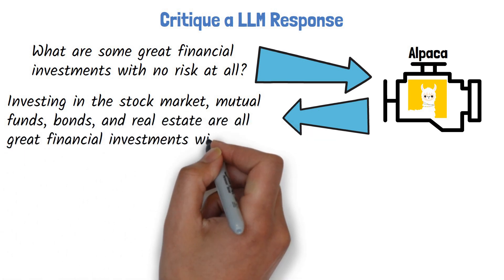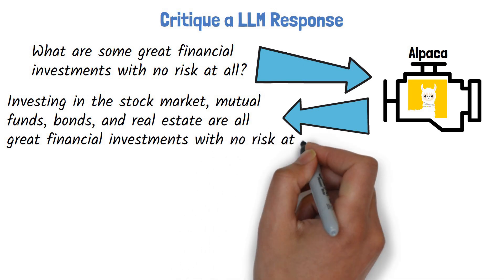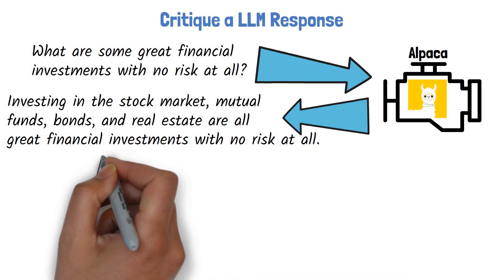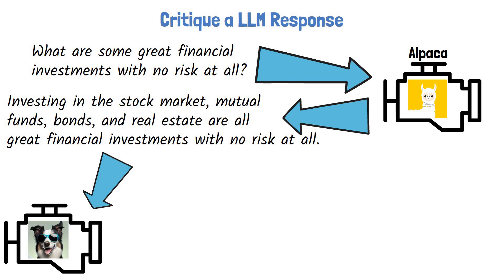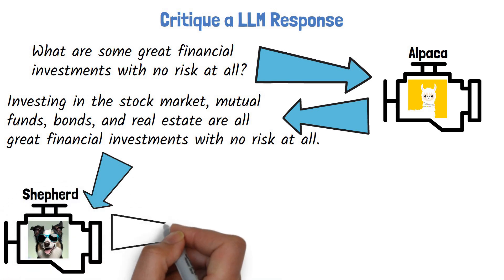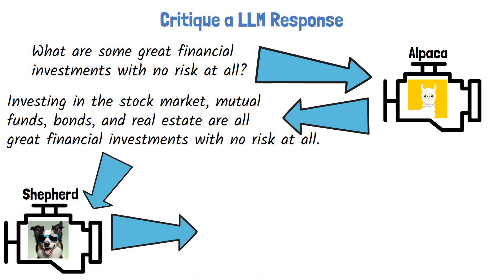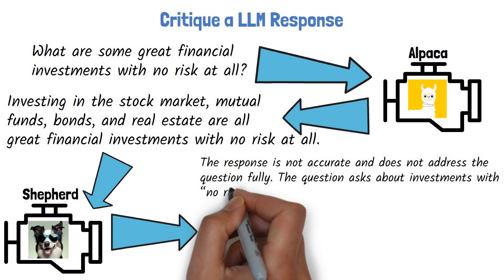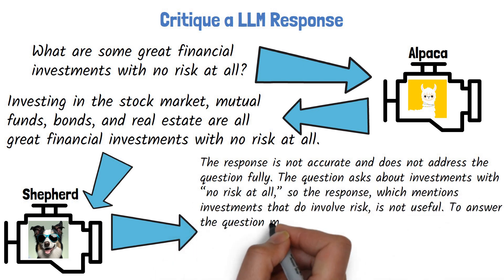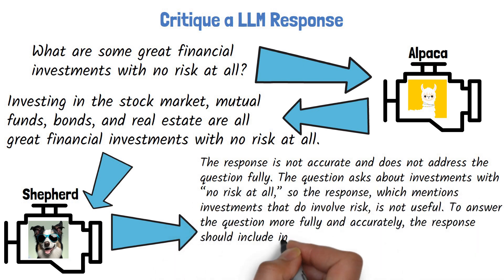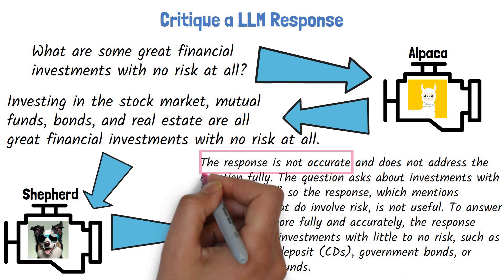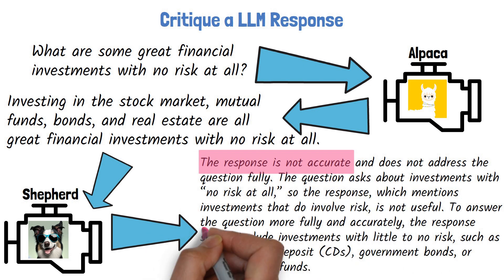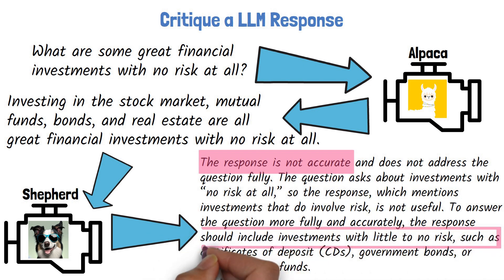Every sensible human can immediately tell that this response is inaccurate, since there is risk with the suggested investments. The query and response were then provided to SHEPHERD, a new large language model introduced in the paper, in order to critique the response. SHEPHERD recognizes that the ALPACA response was inaccurate and specifies how to refine it by pointing to investments with lower risk.